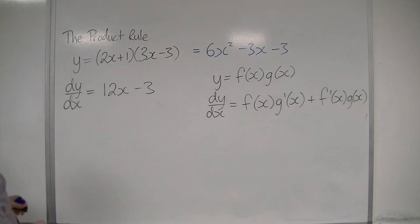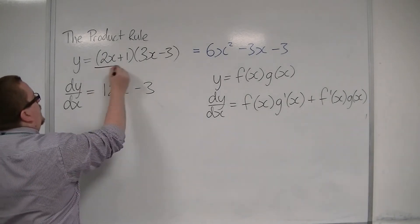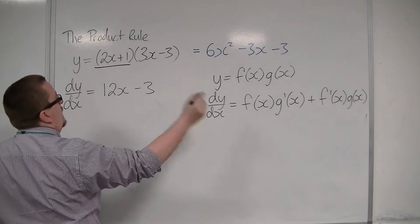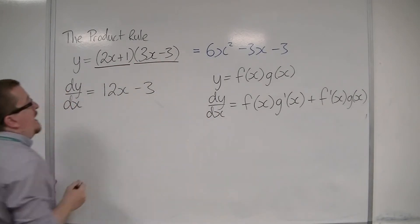So if f of x is 2x plus 1, and g of x is 3x minus 3,